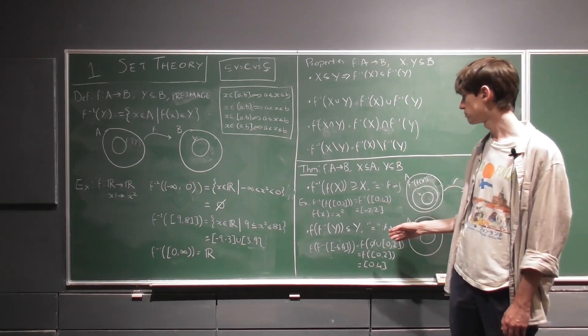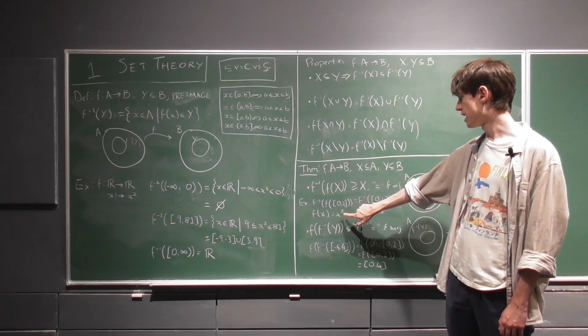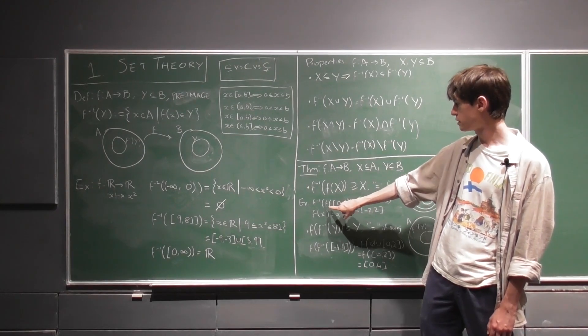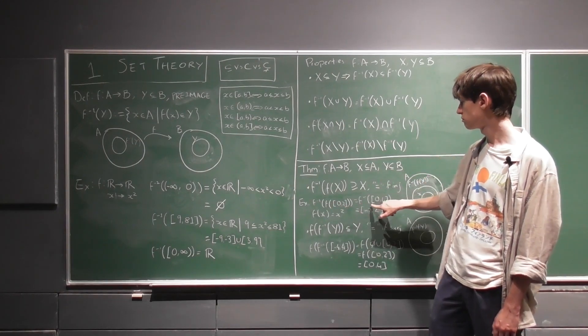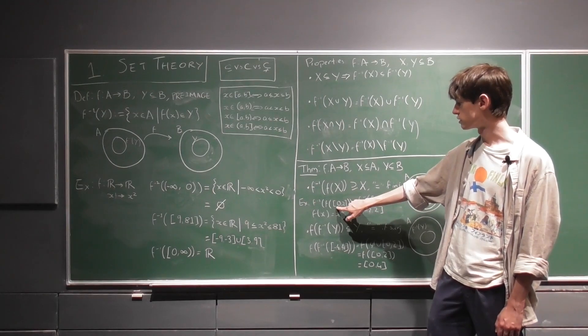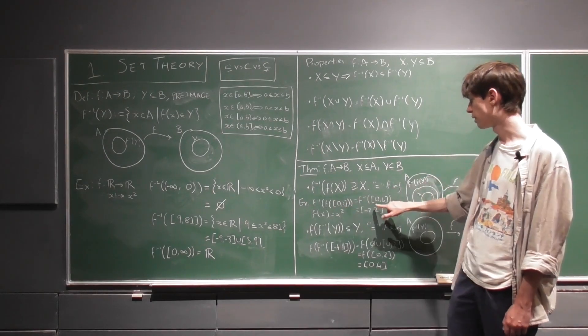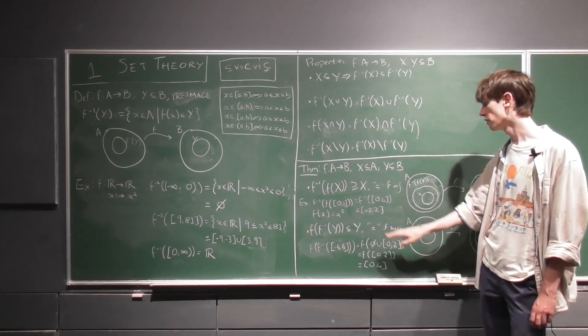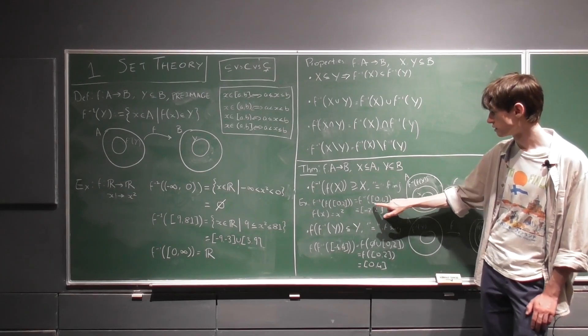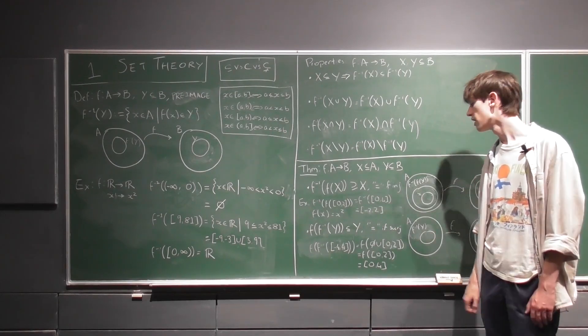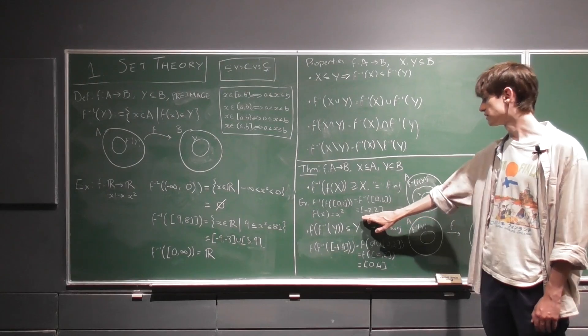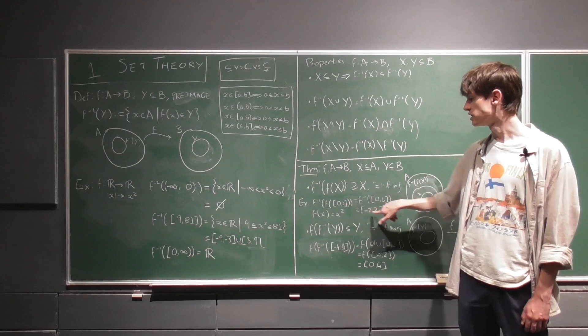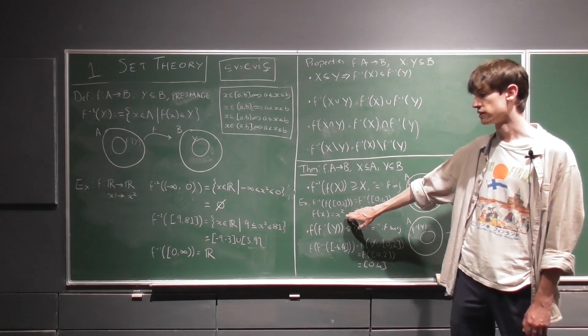So as a counterexample for the equality here, if we take f of x again to be x squared, the image of the interval 0 to 2 is 0 to 4. So that's just all the numbers in here squared lie within 0 to 4. And the pre-image of that is minus 2 to 2 because all numbers from minus 2 to 2, 1 squared, lie in 0 to 4. And we can see that this interval here is, of course, larger than 0 to 2. It's a superset. It contains 0 to 2 because x squared is not injective.